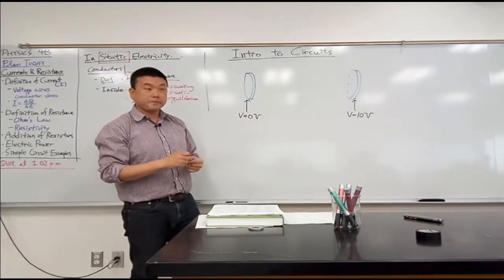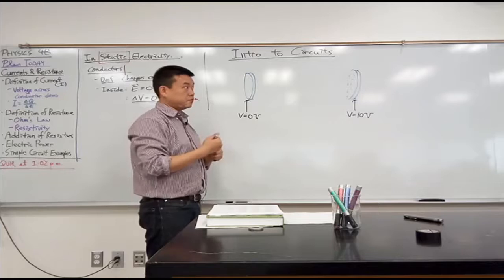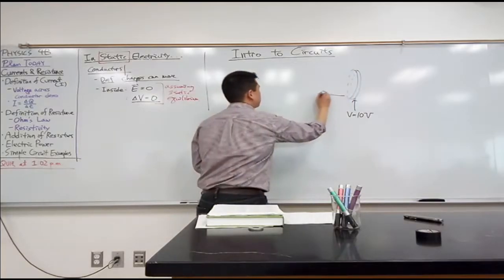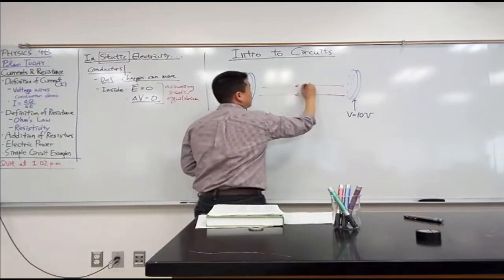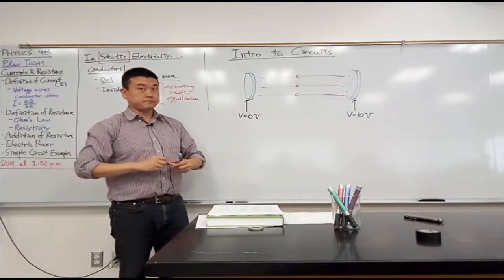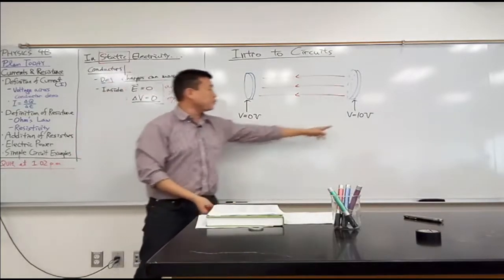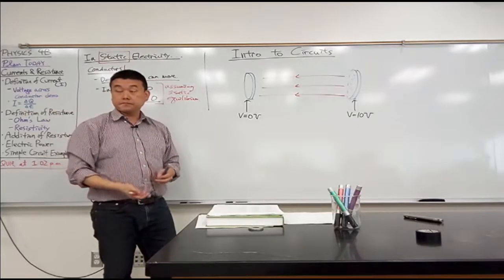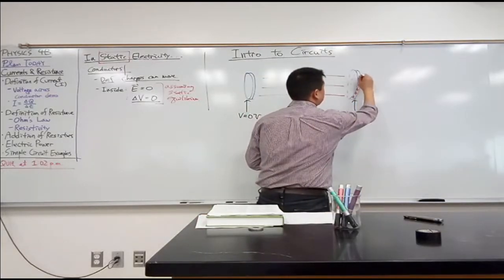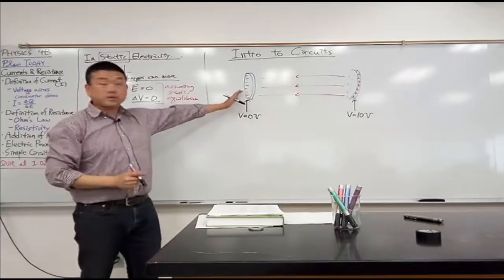There's an electric field between these two. What direction would the electric field go? From high voltage to low voltage — so to the left. That means there's some kind of electric field between them. Why is there an electric field? There's a third feature: charge separation. On the positive plate there should be some positive charges, and on the negative plate there should be some negative charges. That's the electrostatic picture.